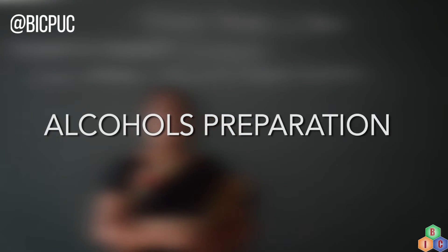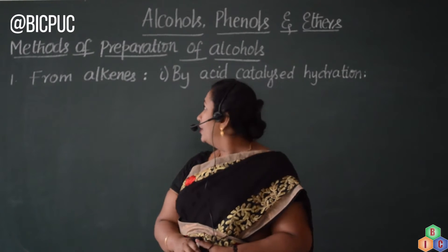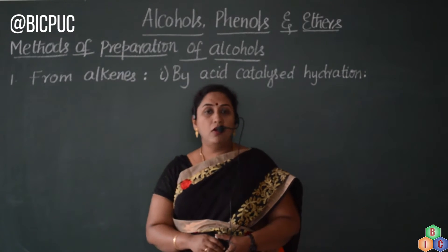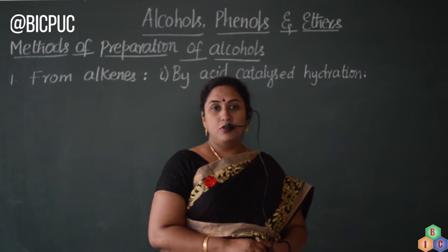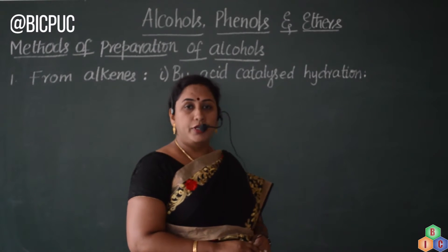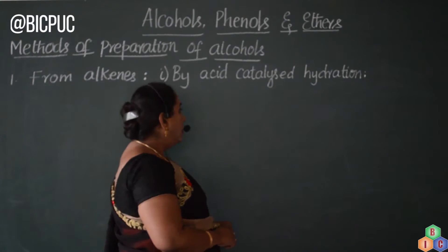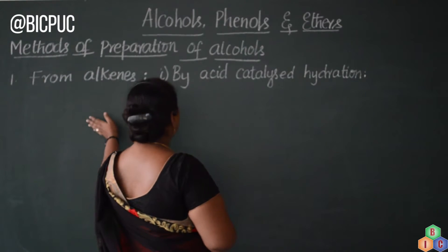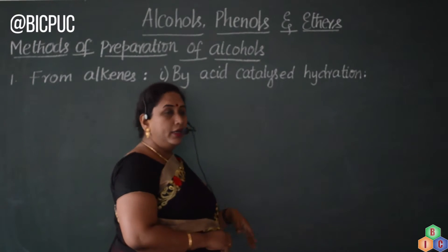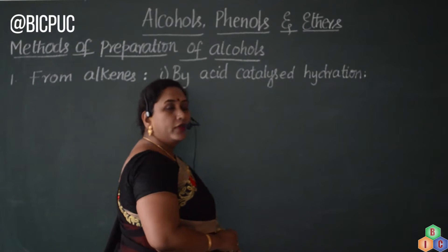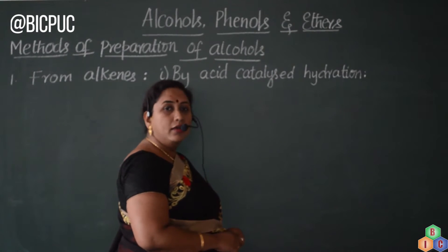In this video lesson, we will understand the general method of preparation of alcohol from the chapter of alcohols, phenols and ethers from Class 12 or 2nd PUC chemistry — specifically organic chemistry. I am going to discuss the general method of preparation of alcohol from alkenes as the starting material by subjecting it to the process of acid-catalyzed hydration, taking acid as the catalyst.